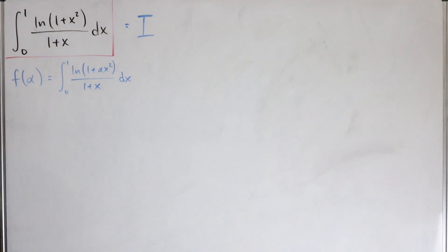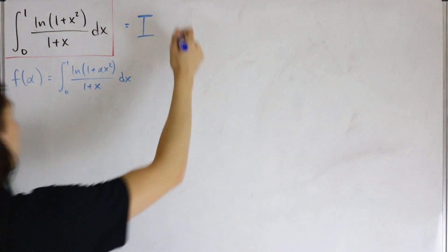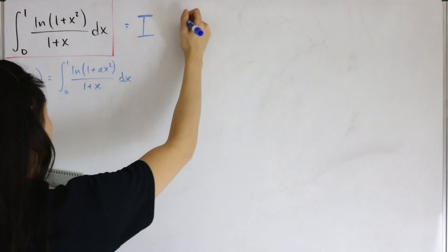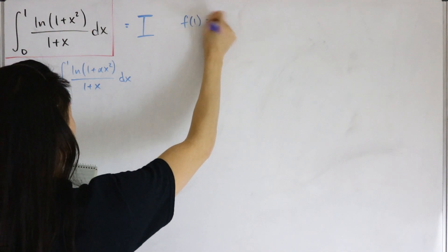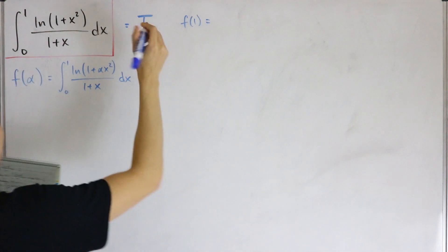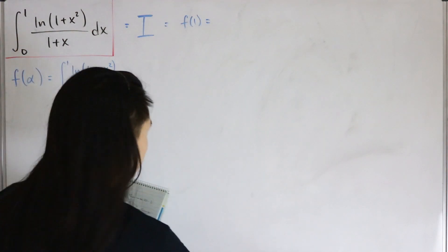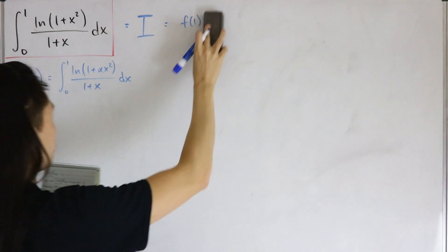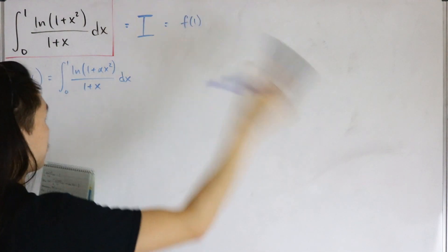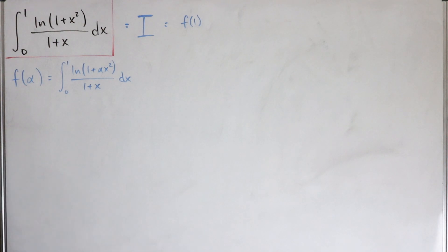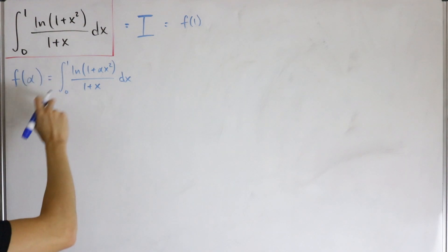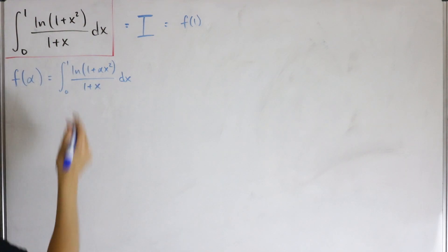It's worth noting that if we plug in alpha equals one, then f of one equals exactly our original integral. So with this in mind, why don't we take the derivative? Utilizing Feynman's trick, we can differentiate inside the integral.